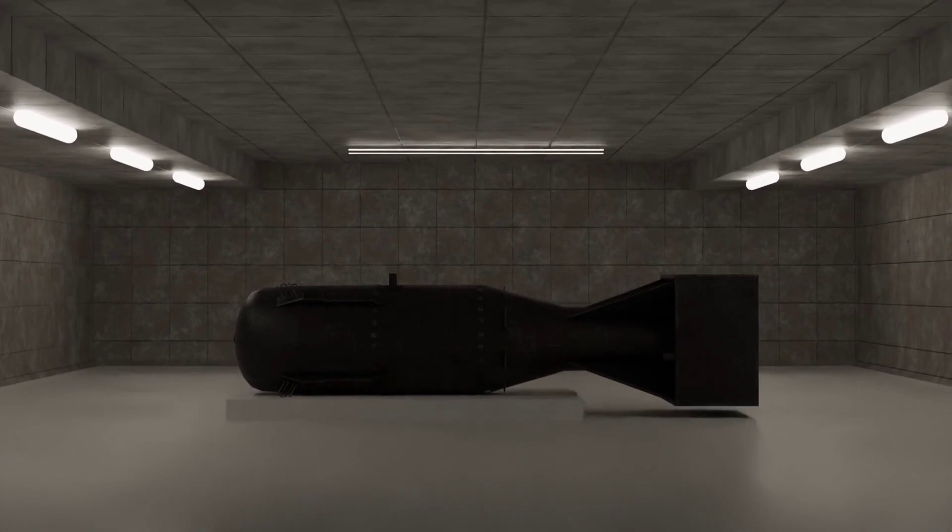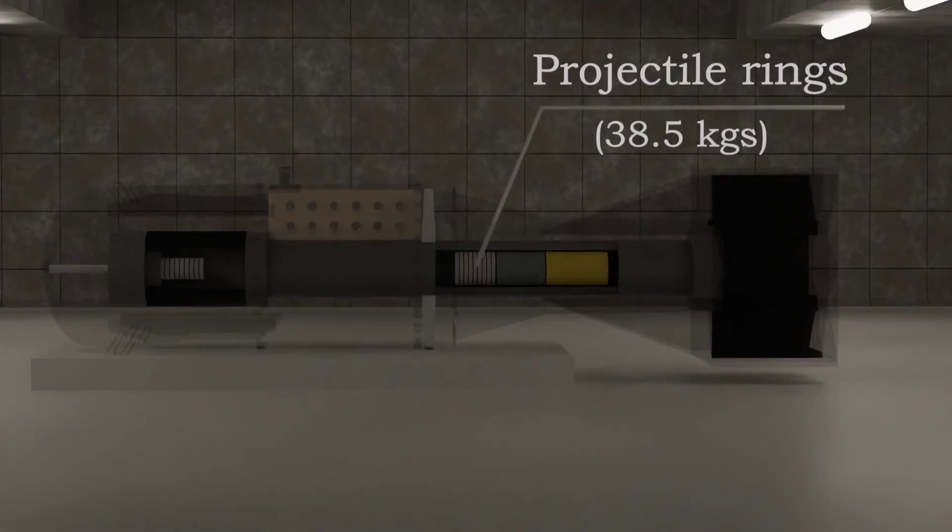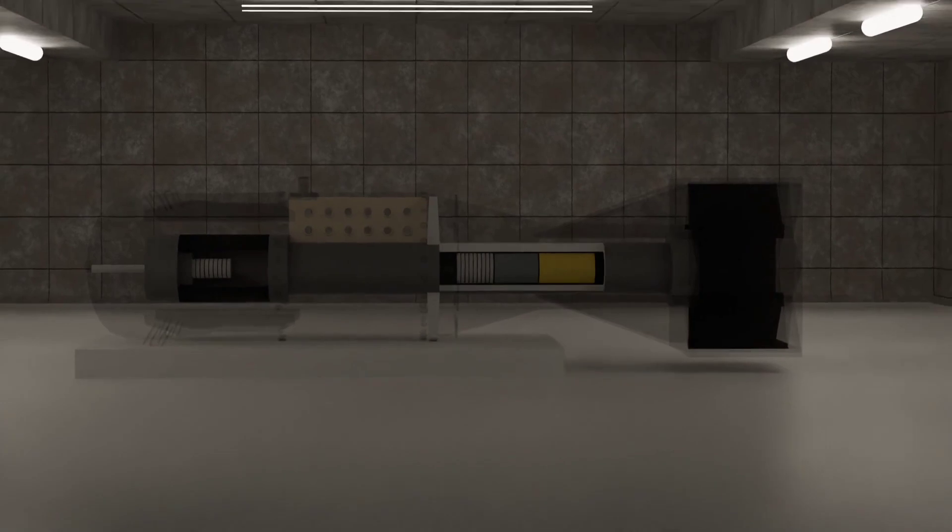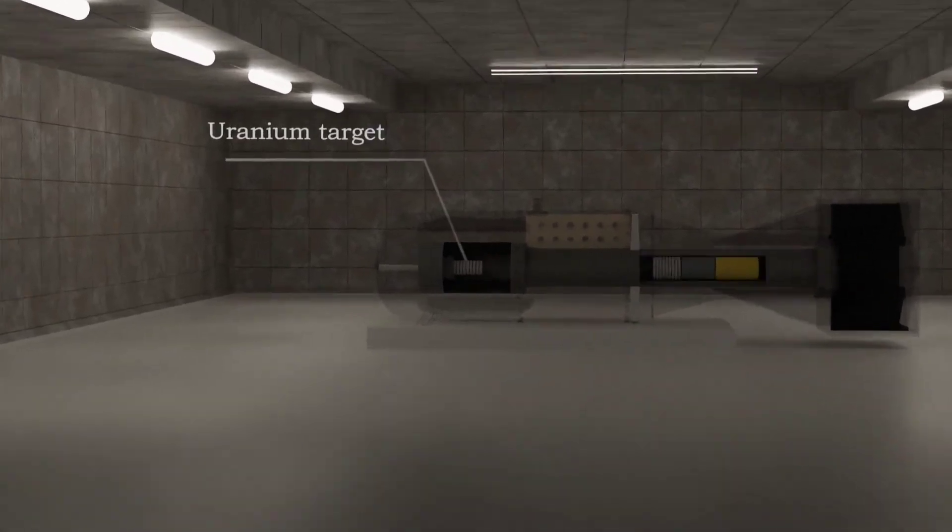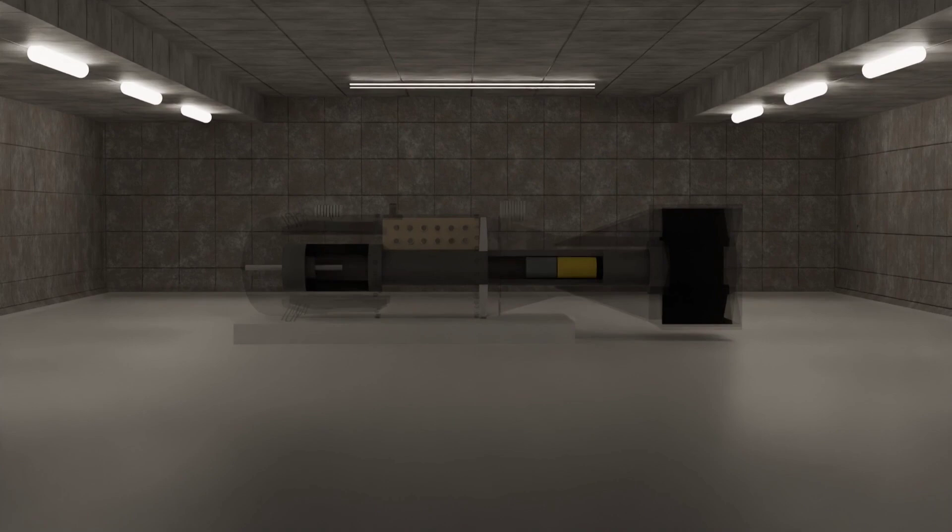Now let's dive into the inner workings of the bomb. It contained 38.5 kilograms of enriched uranium in the form of projectile rings, and 25.6 kilograms of enriched uranium as the target. To activate the bomb, these two masses had to be combined to create a supercritical mass of uranium.